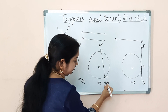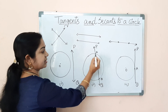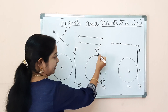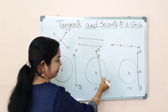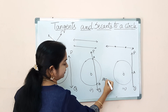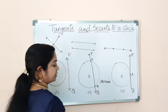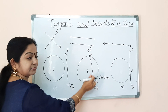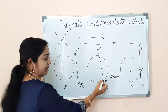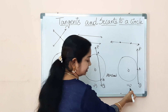When we observe the second figure, the line PQ is intersecting the circle at two distinct points, forming a chord AB. From previous classes when you studied about circles, we know what a chord is. So it is forming a chord AB and it is cutting the circle at two distinct points.